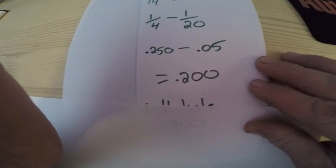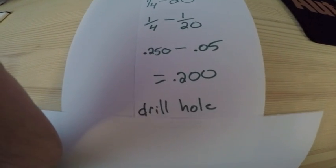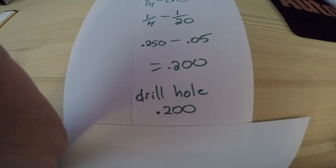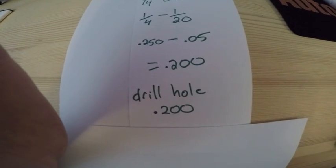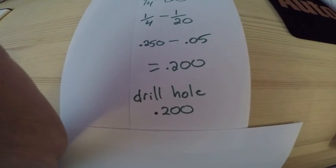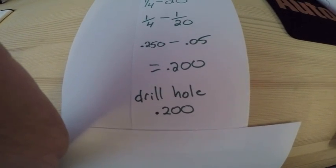So you can grab your calipers, go grab a drill that's right around 200 thou, and that's the drill hole. You're going to drill your hole 200 thou prior to running your tap in it, and you will have good threads.